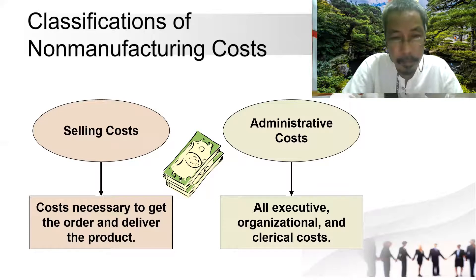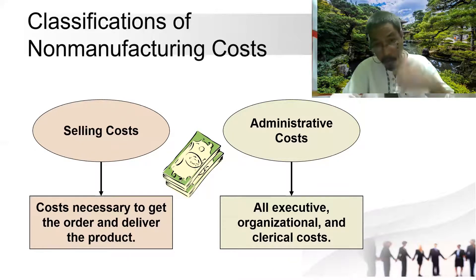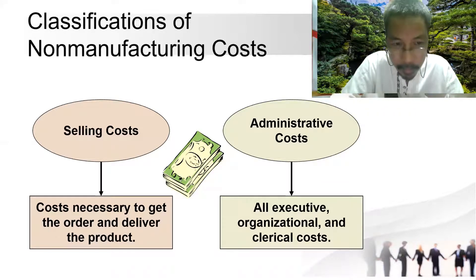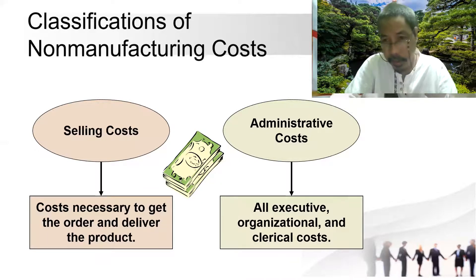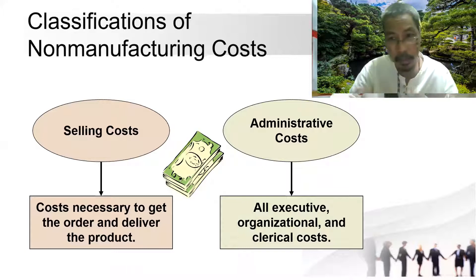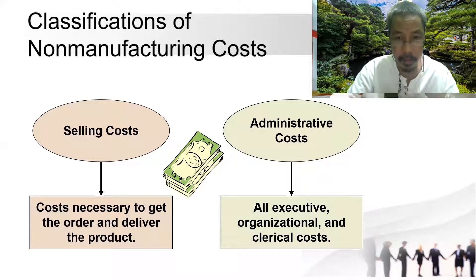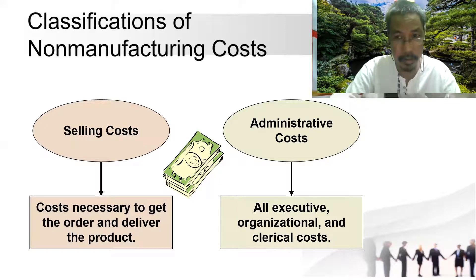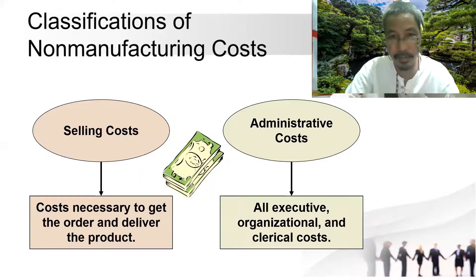We also have the classification of non-manufacturing costs: selling costs and administrative costs. Selling costs are costs necessary to get the order and deliver the product — for example, you pay a commission to the salesman and the sales department so the company can earn. Administrative costs include all executive managers, organizational and clerical costs — those making reports and accounting records. They are not making the product but are very important to the company.